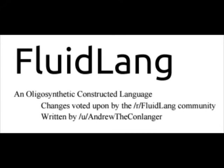FluidLang is an interlang created in 2015 by Reddit user AndrewTheConlanger, and has been continuously updated by the FluidLang subreddit. The version I'll be looking at is version 1.0.6, which was published in late 2016. Its goal is to be an oligosynthetic language that's unambiguous while still having minimal vocabulary.